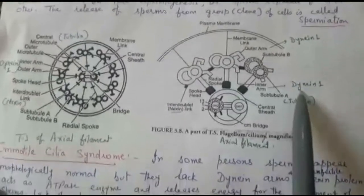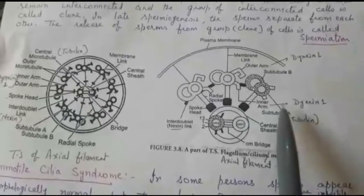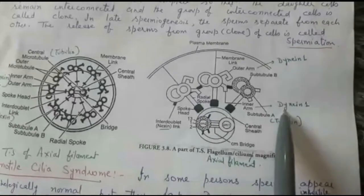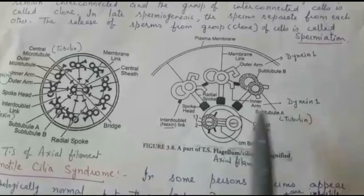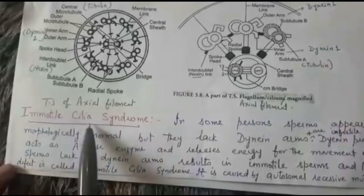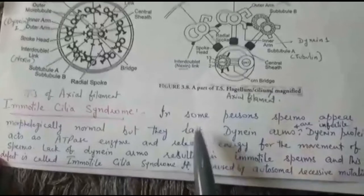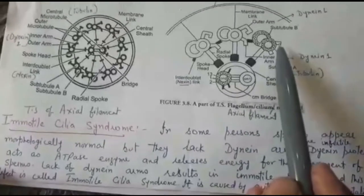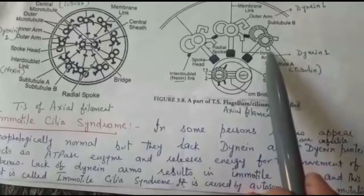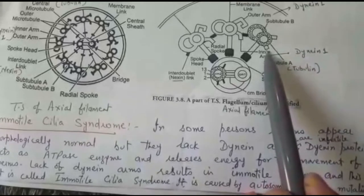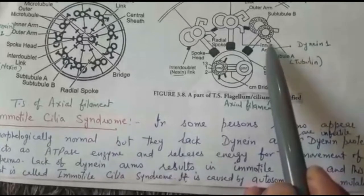The arms are made up of dynein protein. Dynein protein is very important because it acts as an ATPase enzyme — it helps to convert ATP into ADP, releasing energy for the movement of sperm. Related to these dynein arms, there is a syndrome known as immotile cilia syndrome. In some persons, sperms appear externally normal but do not contain dynein arms.